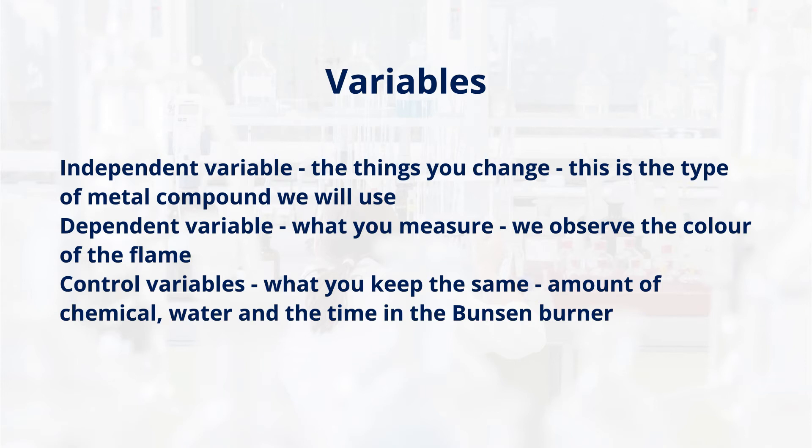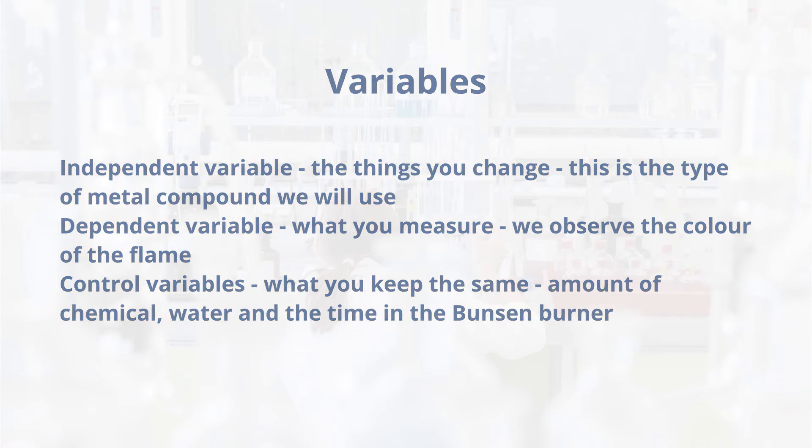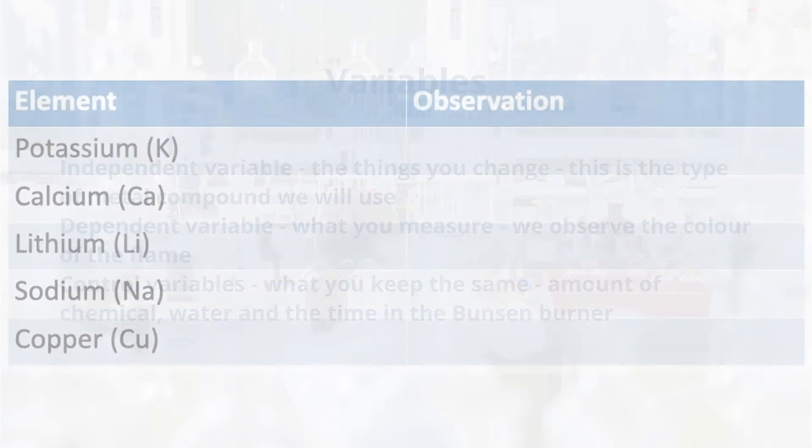Finally, we have the control variable that we keep the same: the amount of chemical, the water, and the time in the Bunsen burner.